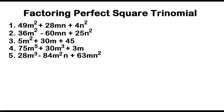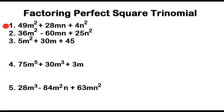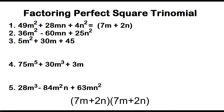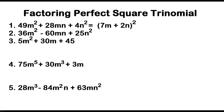Example number one: 49m squared plus 28mn plus 4n squared. The square root of 49m squared is 7m, and the square root of 4n squared is 2n. The factors are 7m plus 2n and 7m plus 2n, or the square of the quantity 7m plus 2n.